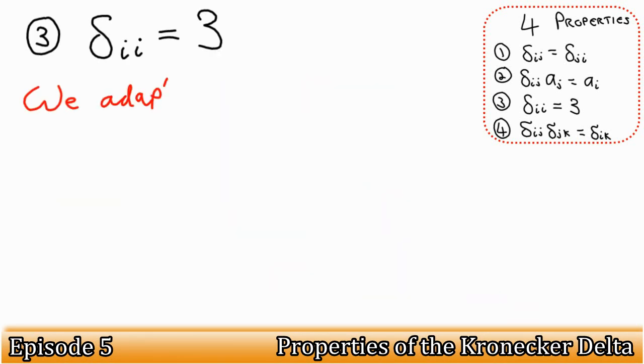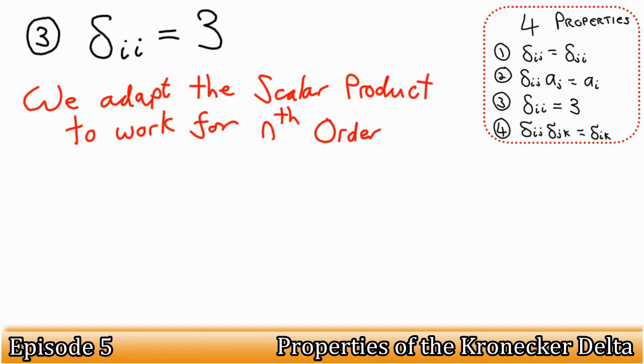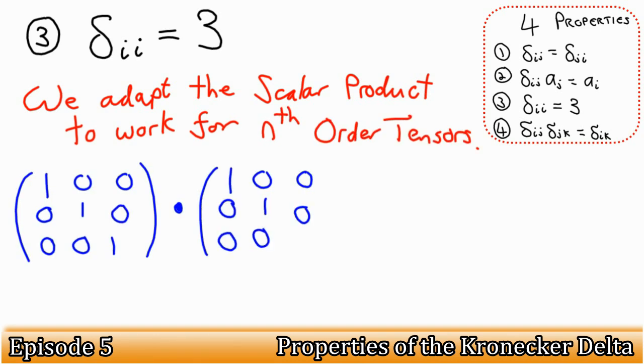Let's have another look at property 3. This should be easy if you can remember the scalar product from earlier in the course. Have a look at these two identity matrices. We only get non-zero values as we're only multiplying elements in the diagonal.